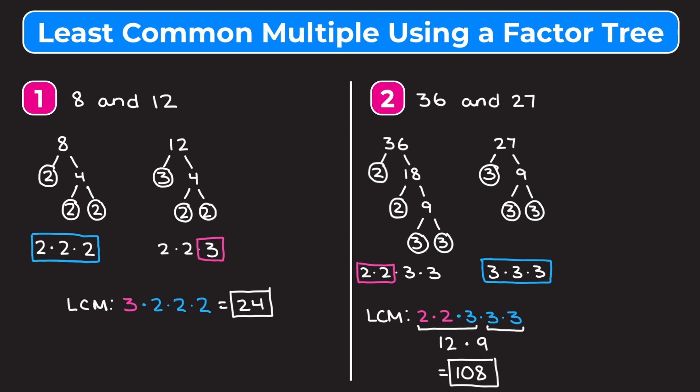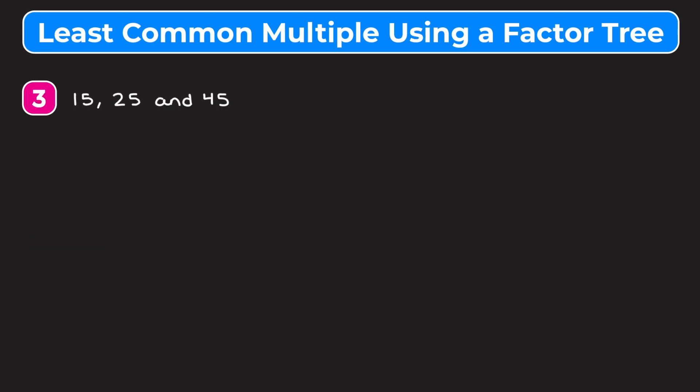Let's go over one example where we have to find the least common multiple between three numbers. For this last example we need to find the LCM between 15, 25, and 45. I encourage you to pause the video and try this one on your own — it's a bit more challenging because there are three numbers, but you'll use the same method as examples one and two. Then unpause to watch me work through it.